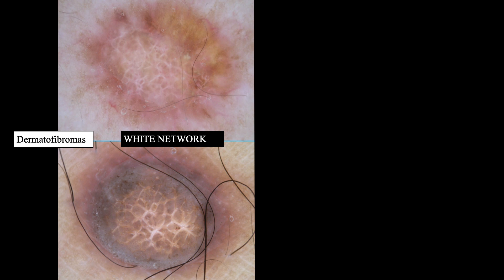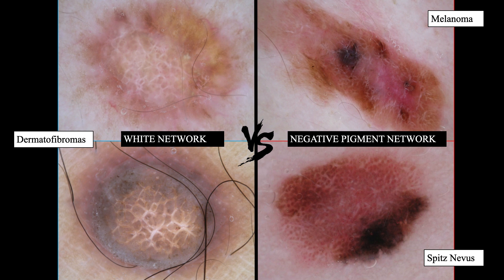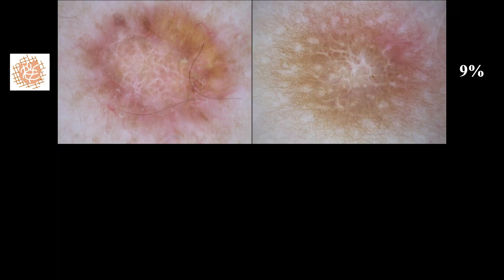However, this feature appears to be particularly interesting in light of differential diagnosis of other pigmented lesions. There is a similar dermoscopic feature called negative pigment network that is seen in many melanomas and Spitz nevi. Dermoscopically, the distribution of the negative pigment network is more irregular and the lines of the network are light, not white. In doubtful cases, excision is mandatory. We can find this white network most commonly in the center of dermatofibromas, surrounded by a delicate pigment network, as we can see in these two cases.